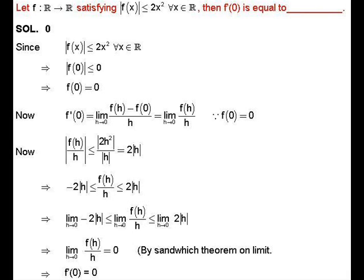For this, take |f(h)/h|. Since we know |f(x)| ≤ 2x², we have |f(h)/h| ≤ |2h²|/|h| = 2|h|.